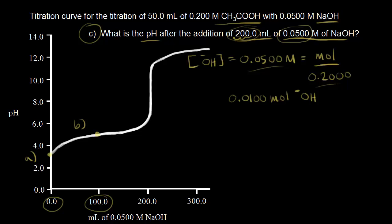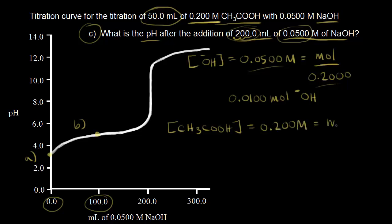How many moles of acid did we start with? We had 50 milliliters of a 0.2 molar solution of acetic acid. The concentration of acetic acid was 0.2 molar, equal to moles over liters, and 50 milliliters is 0.05 liters. So 0.2 times 0.05 gives us 0.010 moles of acetic acid.